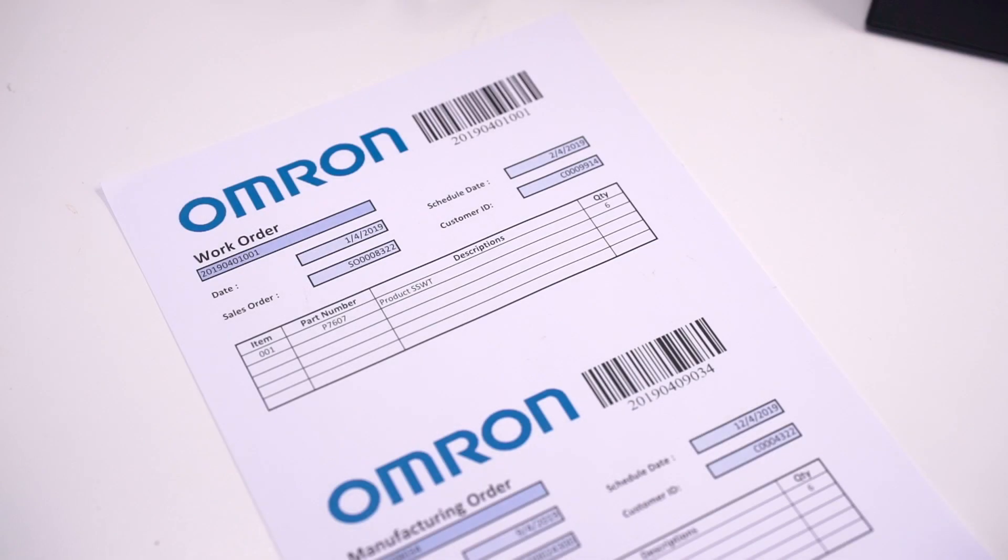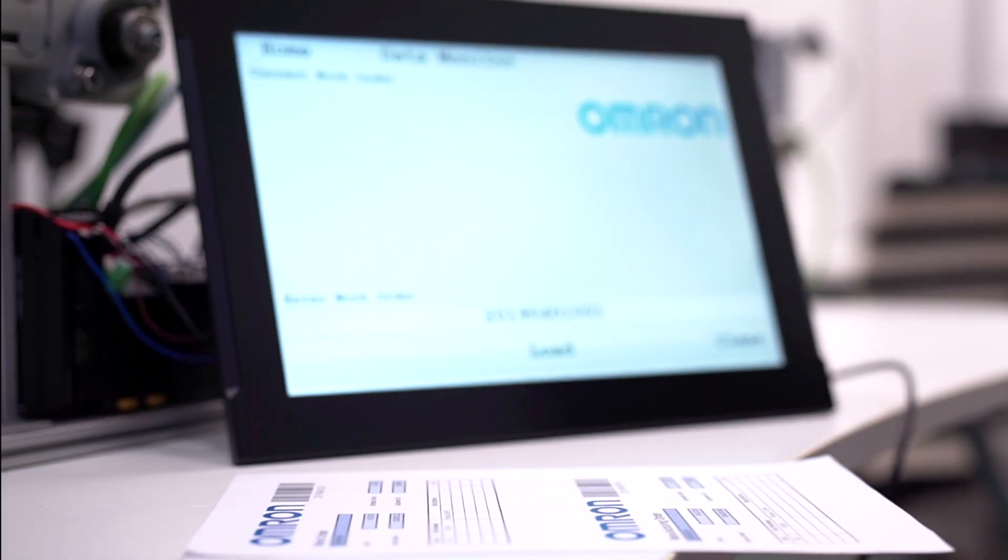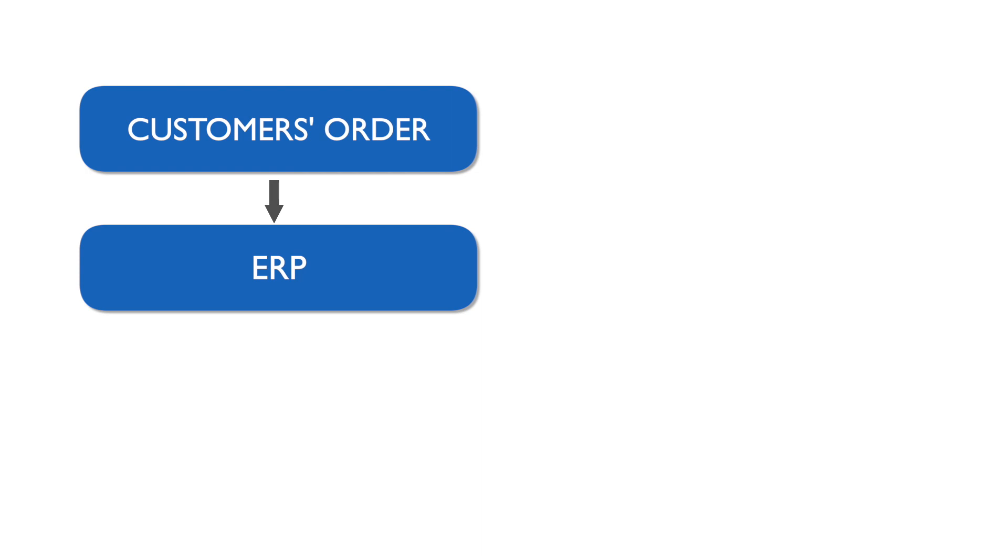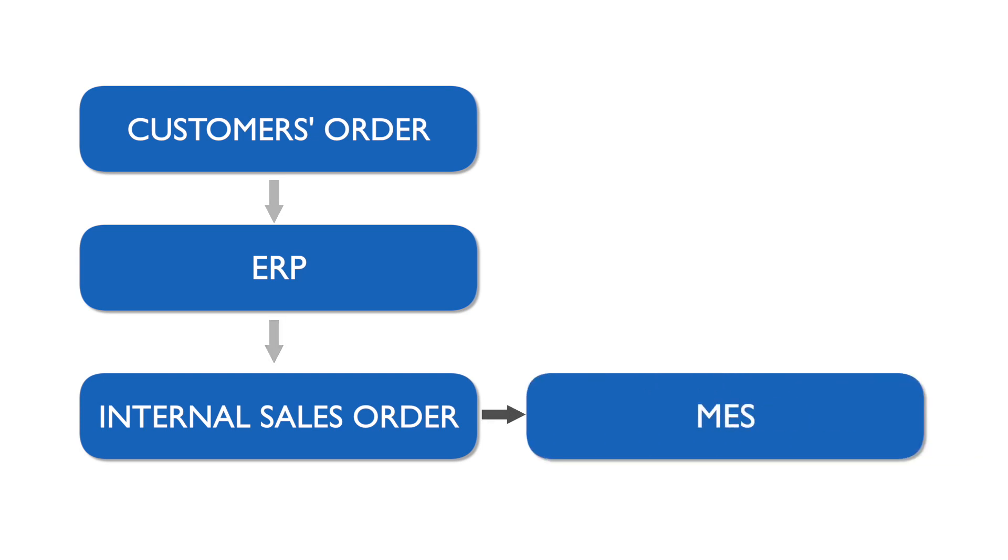From a work order, the system can automate and provide accurate data to load manufacturing details for production. The ERP receives orders from customers and generates an internal sales and work order. The work order will then be dropped into the MES system for processing.